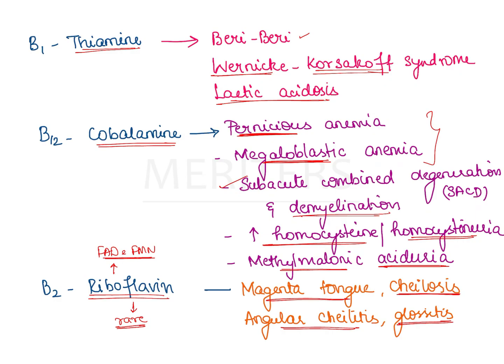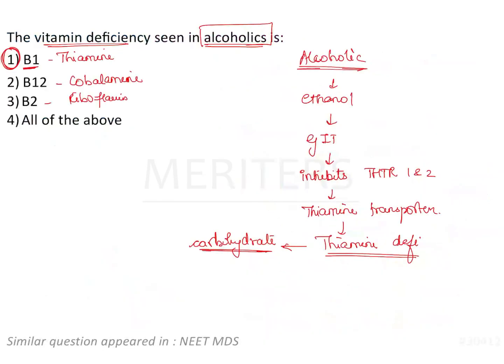These are some of the important points to remember in case of deficiency of thiamine, cobalamin, and riboflavin. The question asks about the deficiency seen in alcoholic patients: alcohol inhibits the absorption of thiamine by inhibiting the expression of thiamine transporter in the intestine, so thiamine is not absorbed into the body. Therefore, the deficient vitamin is option 1, B1, that is thiamine.